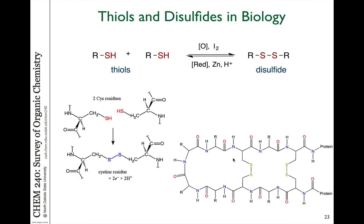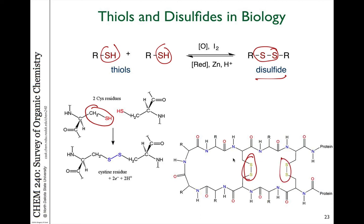As an aside, sulfur compounds are present in amino acids. Cysteine has a thiol side chain. And if cysteine is incorporated into a protein, if you have two sulfur-thiol groups in a protein, those could be oxidized to form a sulfur-sulfur bond — what we refer to as a disulfide — that can link up amino acids in proteins and affect the structure of proteins. And that's quite interesting.